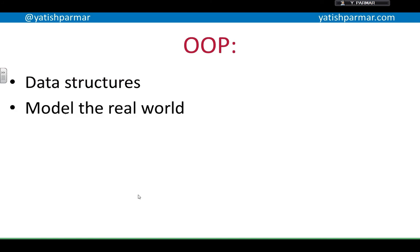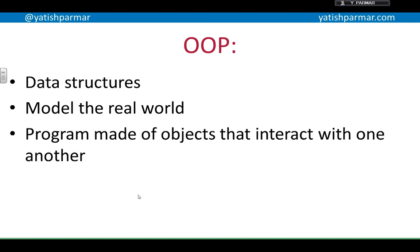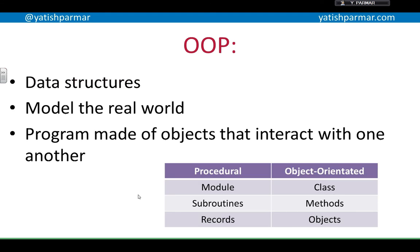Those data structures model the real world, and then we can create objects out of those templates — those data structures — and the program is made up of objects that interact with one another. In a procedural program, you would have modules; in OOP, you have classes. You have subroutines in procedural programs, and these are replaced with methods. The methods allow your different objects to interact with each other and access their data.